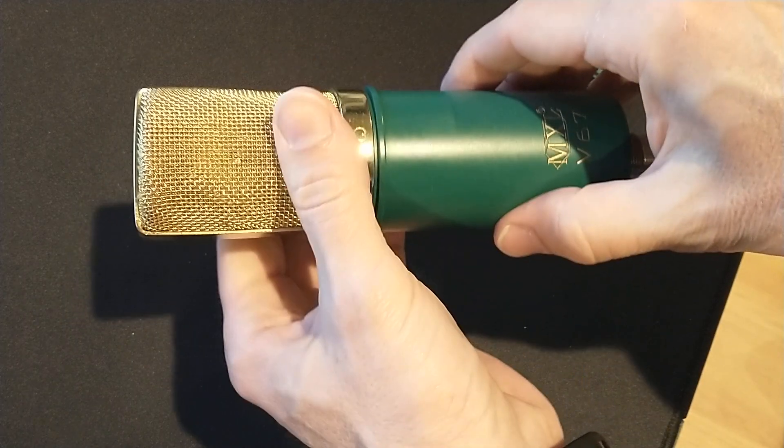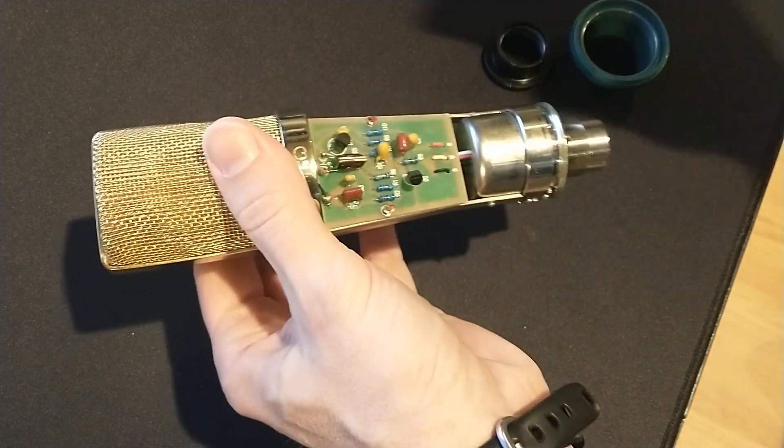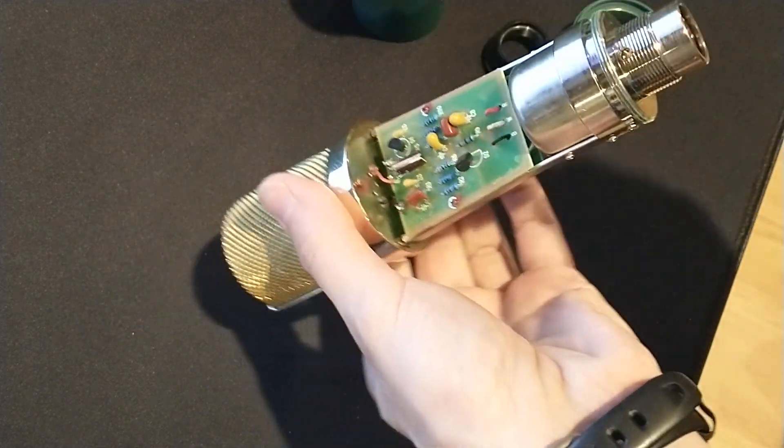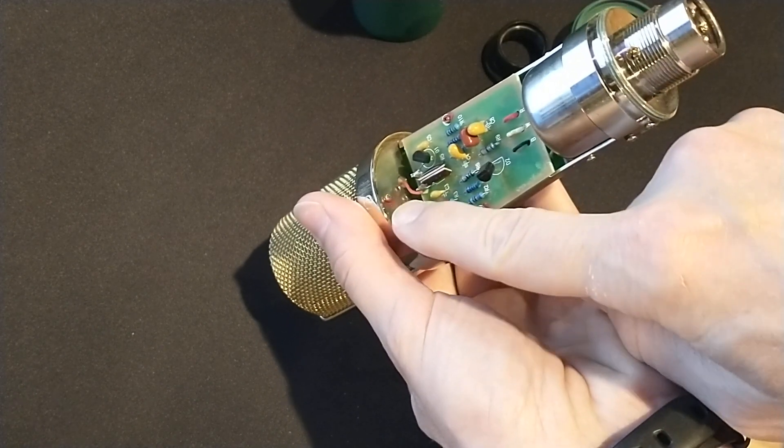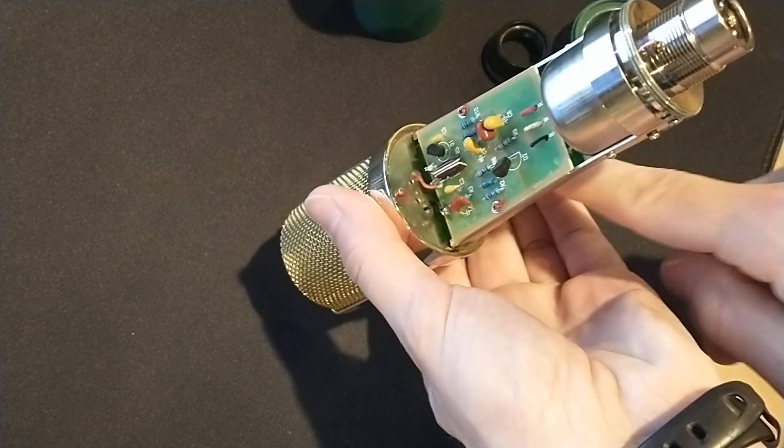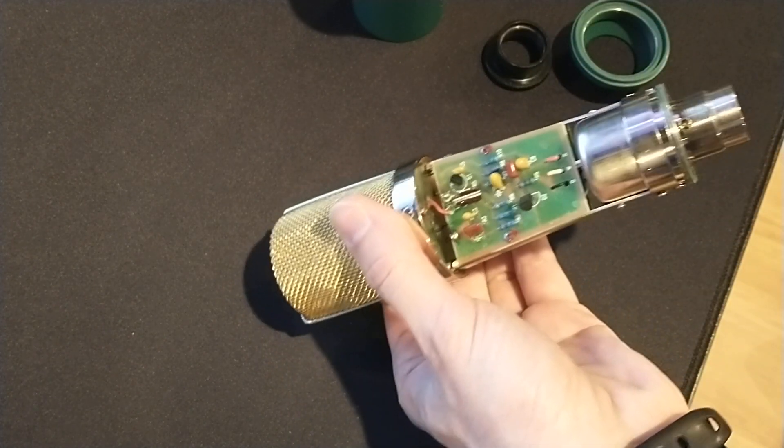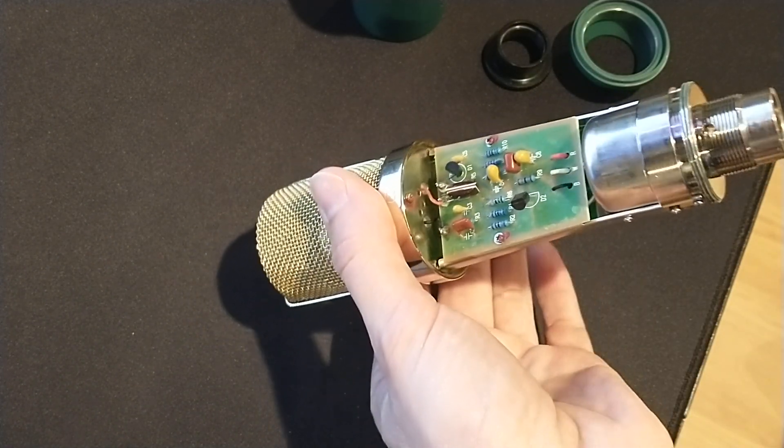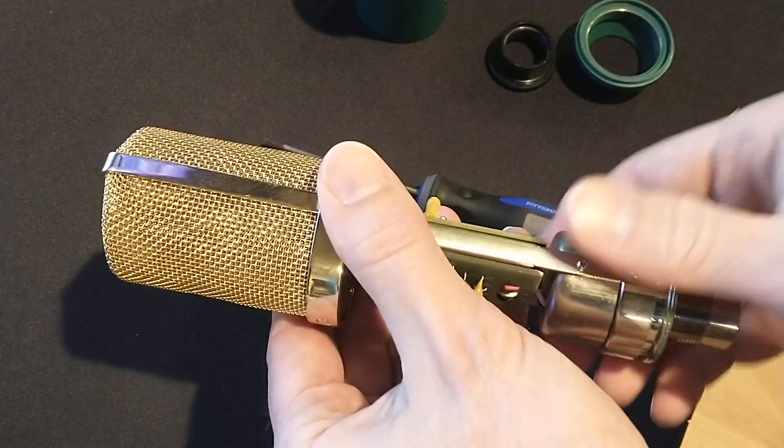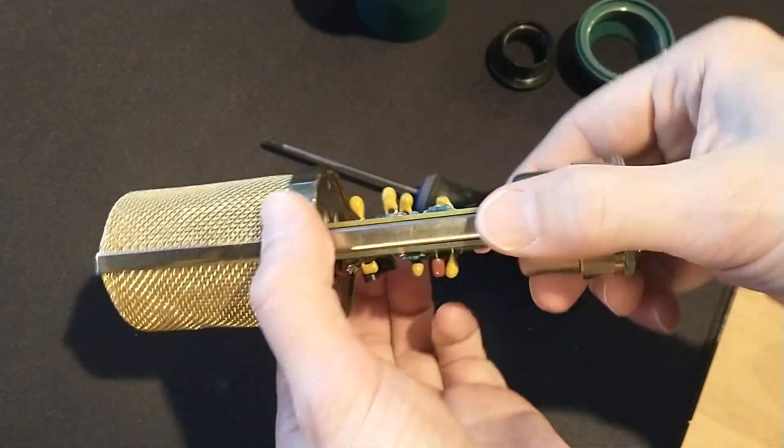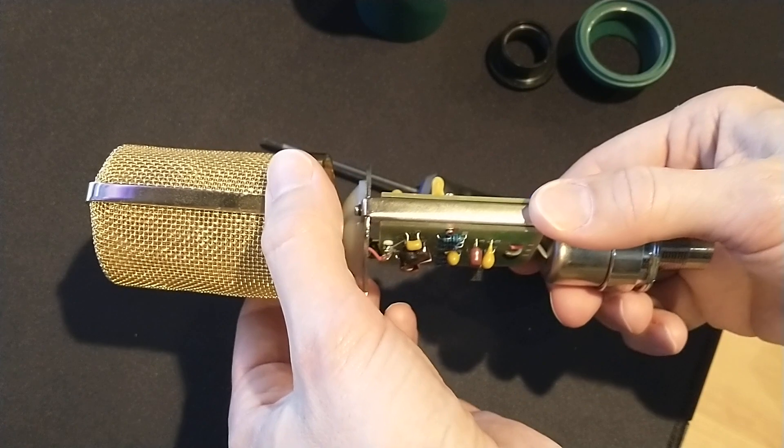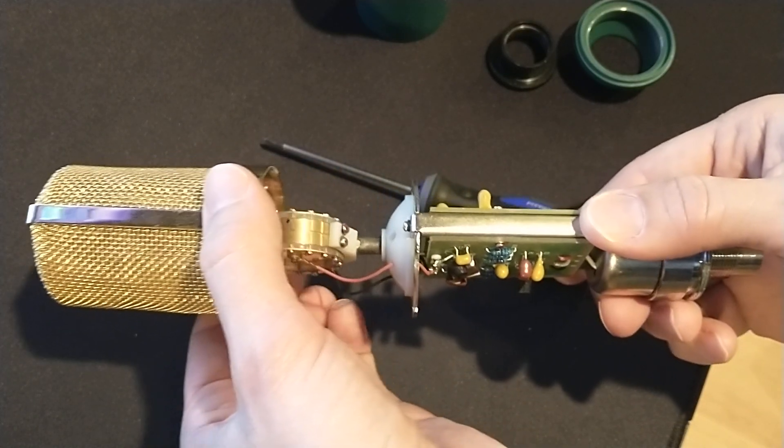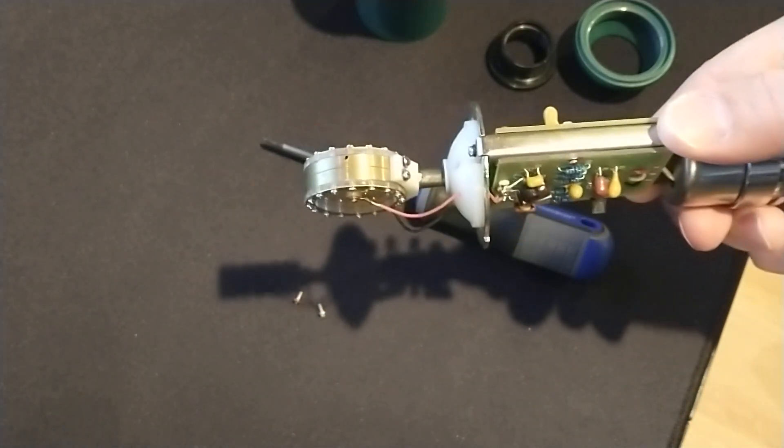Okay, and then that'll let us take the body off. And now we're going to remove these two screws—there's one on each side that hold the head basket on. So we'll do that. I'll pause the video while I do that. Okay, so I'll remove those two screws. I'm just going to lift the head basket off.